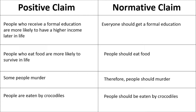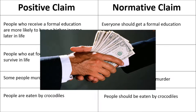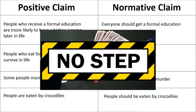This naturalistic fallacy of deriving an ought statement from an is statement is very enticing because it generates an emotional reaction. This often occurs in politics where they bring up some data showing that when we put money into this area there's some beneficial outcome, and therefore we ought to put money into that specific area. People react positively — everyone gets a formal education, everyone gets food — but it ignores the underlying reality that we're stealing money from one group of people to spend it on another.